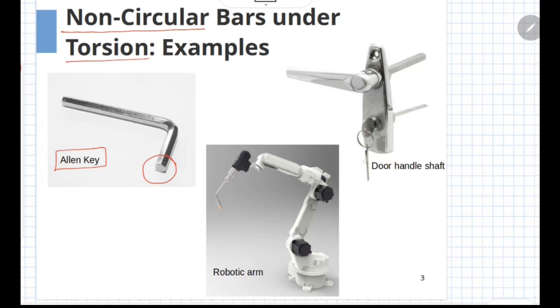The second example is that of a door handle shaft, the component which is protruding inside the handle. So whenever you are applying torque on the handle, this particular non-circular bar transmits the torque in order to operate the mechanisms for locking or unlocking the device.